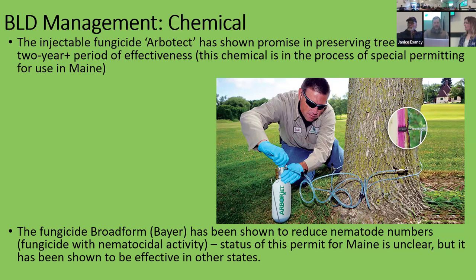There are also chemicals coming online that have been found to work really well, involving a pressurized injection system. Arborjet (Arbortect) is being used to inject trees — it's also shown promise in preserving beech trees that have low infestations of beech leaf disease and keeping nematode levels down. It has a two-year period of effectiveness, whereas with the polyphosphate 30 drench you have to do it twice a year every year. The injectable treatment involves wounding the tree at the base, and the chemical is expensive. Right now this is not an option in Maine as it hasn't passed a special permitting process, but it is in process and may be available legally by the summer.